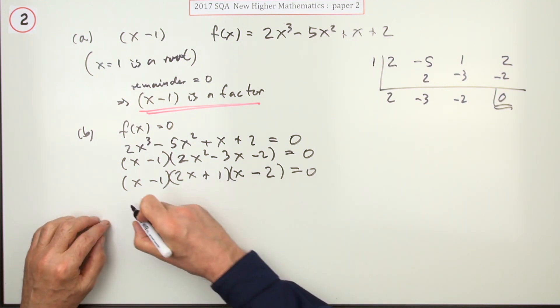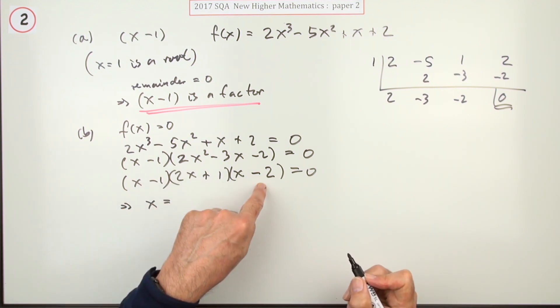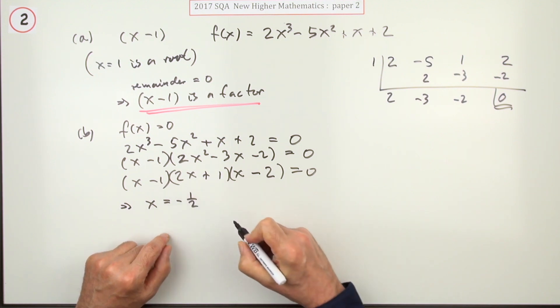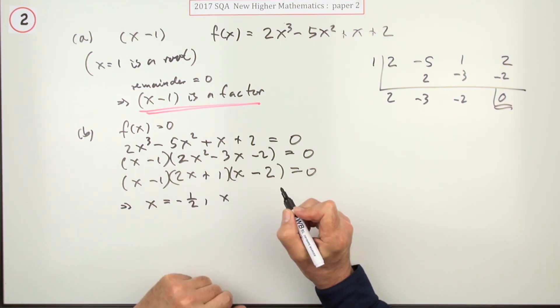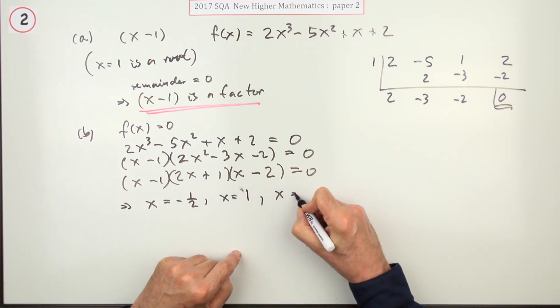So there's the complete factorization. Here's the solutions: you can either put them down in that order or put them in numerical order. You won't get any extra marks for doing that though. So x equals negative a half, x equals one, and x equals two.